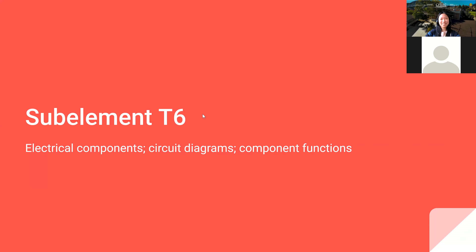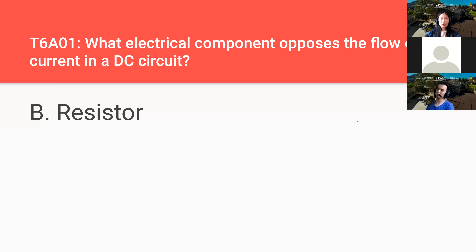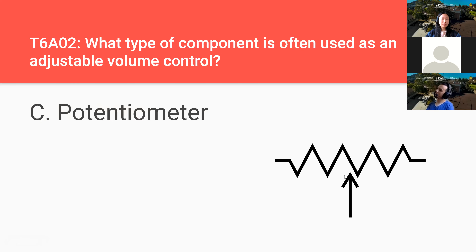Which electrical component opposes the flow of current in a DC circuit? A resistor. What type of component is often used as an adjustable volume control? A potentiometer — this is one of the components with knobs on them.